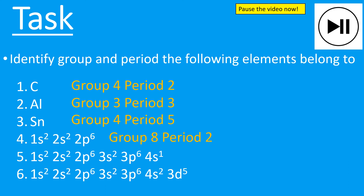Question five: group one — one outer electron — and period four because it has four shells. Question six is classed as a d block element and it's in period four because it has four shells. Be careful — it's not period three, because it does have the 4s subshell, giving a total of four shells. But the outer electrons are classed as being in the d subshell, so it's a d block element.